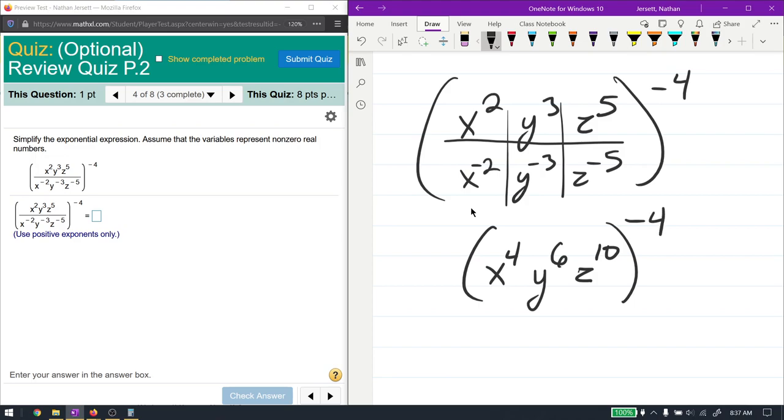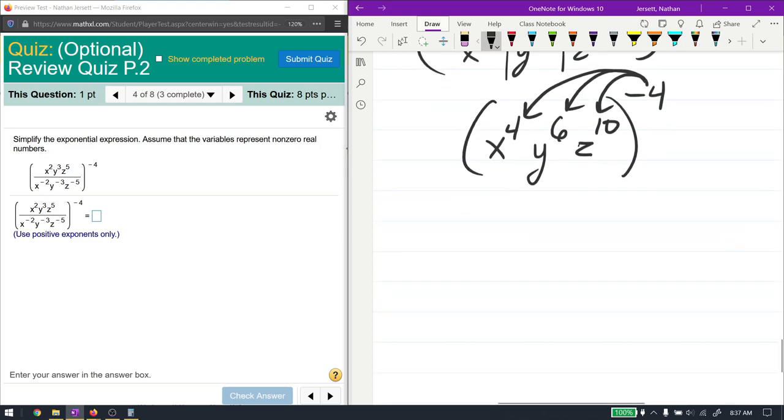Now this is a power that's got things multiplied on the inside. One of the rules of exponents says we can distribute this power into the inside things. What's important to note here is that you distribute them into the powers. You don't multiply the things by negative 4. You distribute the negative 4, and you multiply into the powers. The negative 4 gets distributed into the 10, into the 6, and into the 4, not into the x, the y, and the z.